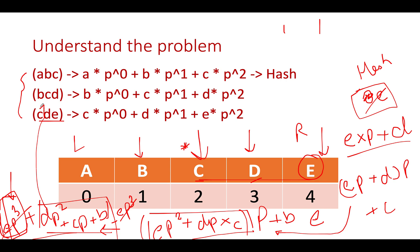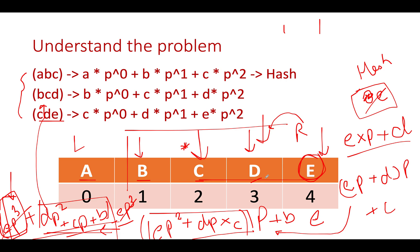The formula is: previous_hash · p + new_character, then subtract the outgoing character · p^k. The end pointer is reduced by one for the next iteration. Following the same steps: multiply by p, add 'a', subtract d·p^k. This approach is straightforward, and now let's walk through the coding session.